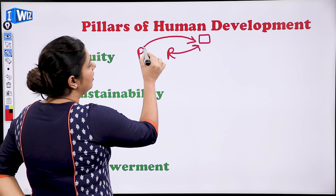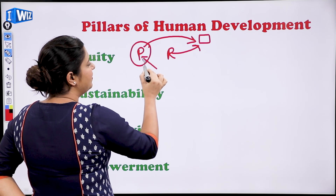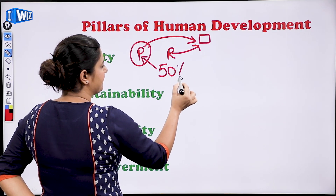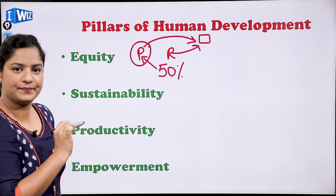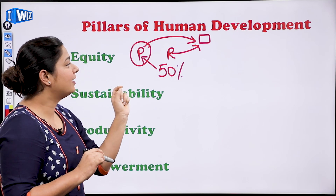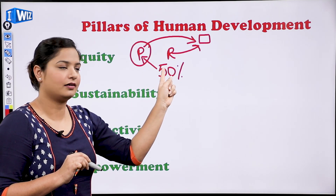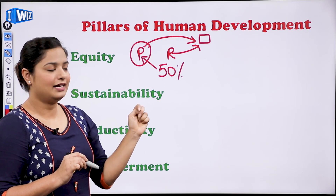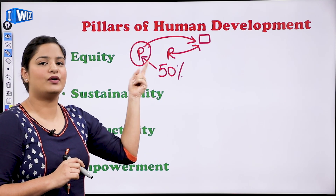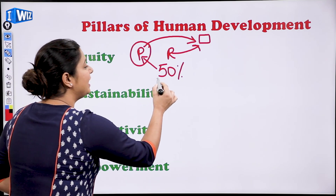On the other hand, if the poor person gets a 50% discount on fees, it becomes easier for them. Paying 100% fees is very easy for the rich person, but for the poor person, with a 50% discount they can easily pay. So this is called equity — bringing everyone to the same level first.